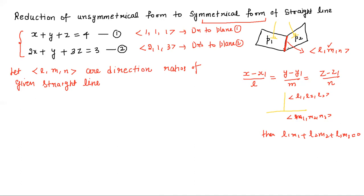Now we know that the normal is perpendicular to the given line. So the direction ratios of the normal to plane 1 are, say, 1, 1, 1, and the line direction ratios are L, M, N — giving us the condition: 1·L + 1·M + 1·N = 0. Similarly, for the normal to plane 2, we apply the same reasoning: 2L + 1·M + 3N = 0.